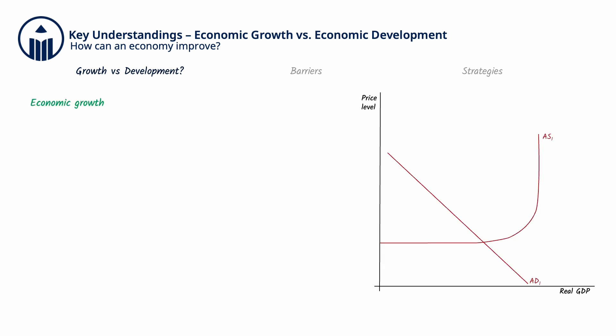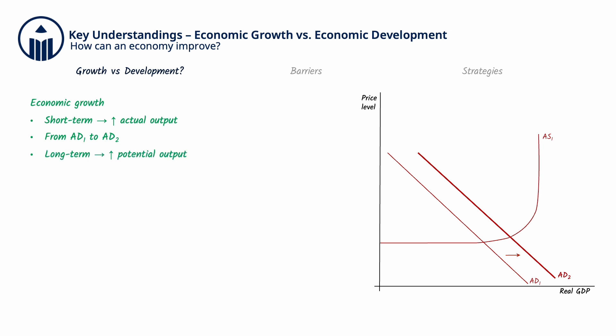Economic growth can occur in the short-term and the long-term. Short-term growth refers to an increase in actual output and is represented by a rightward shift of aggregate demand from AD1 to AD2, while long-term growth refers to an expansion of the economy's potential output and is represented by a rightward shift of aggregate supply from AS1 to AS2.